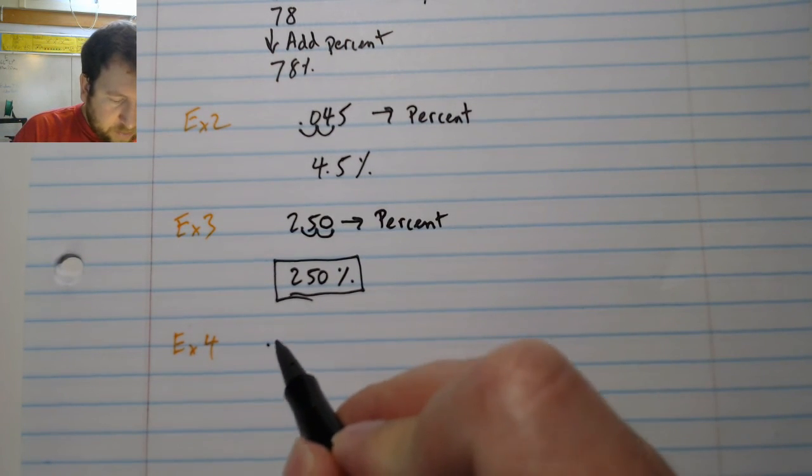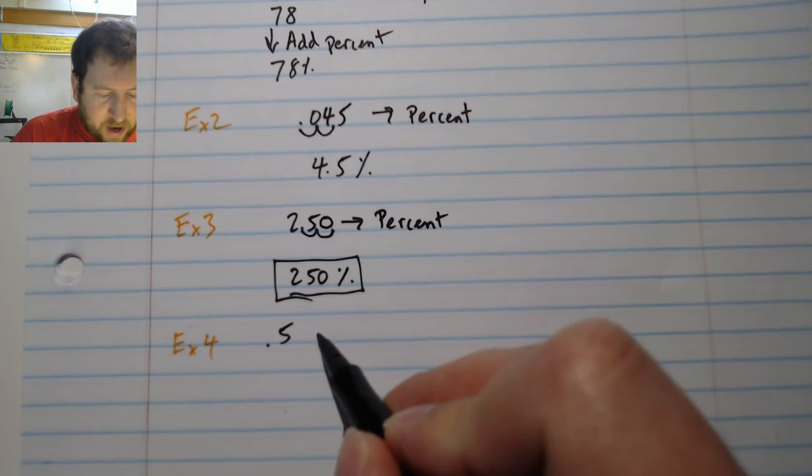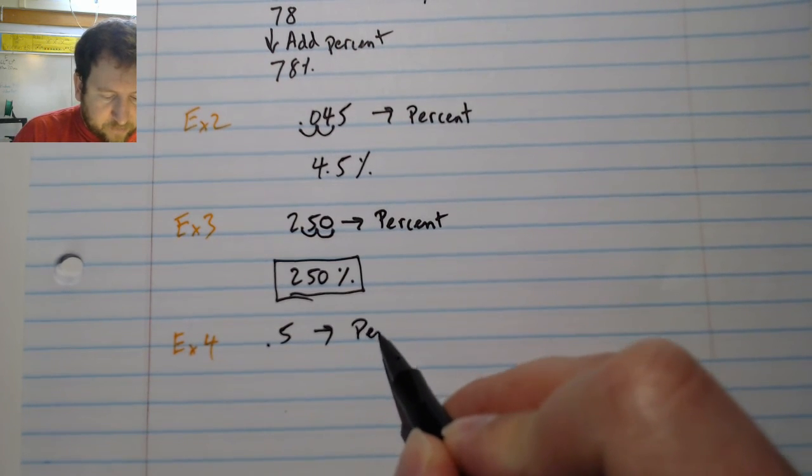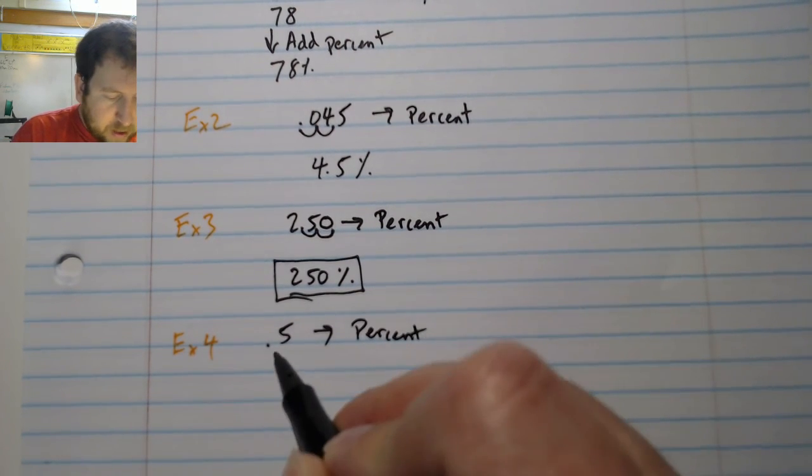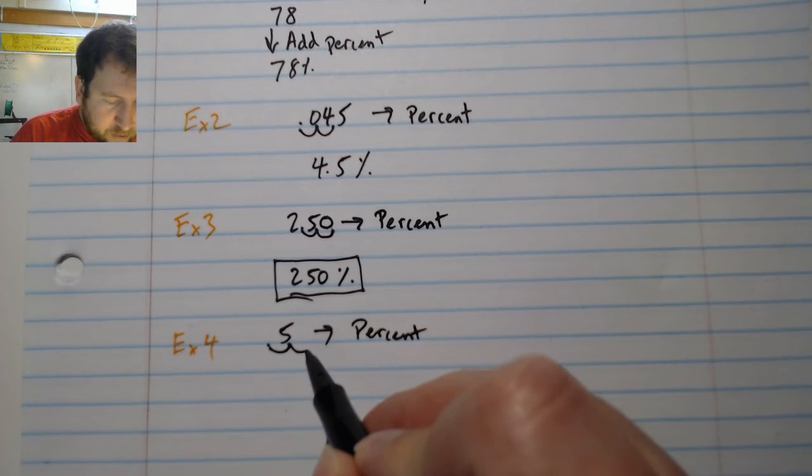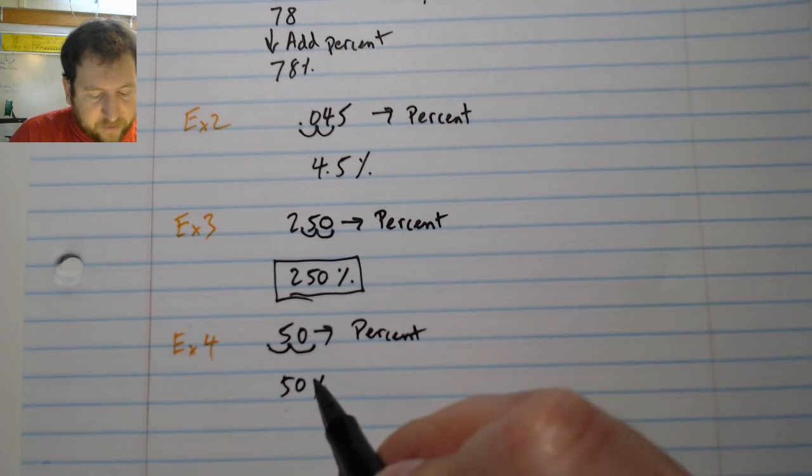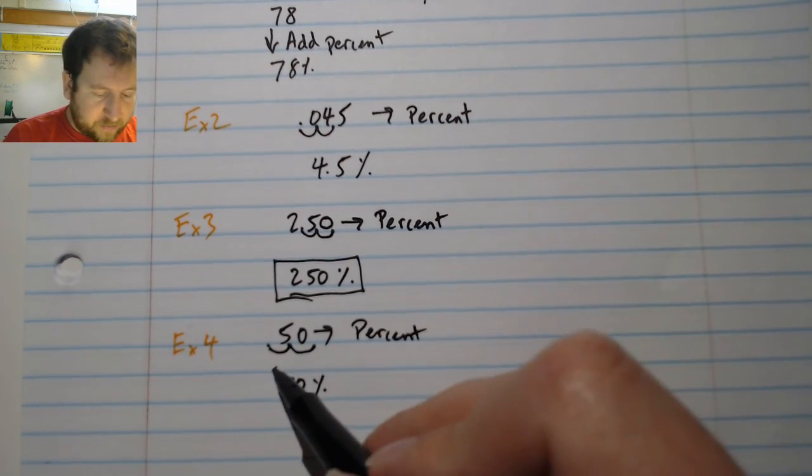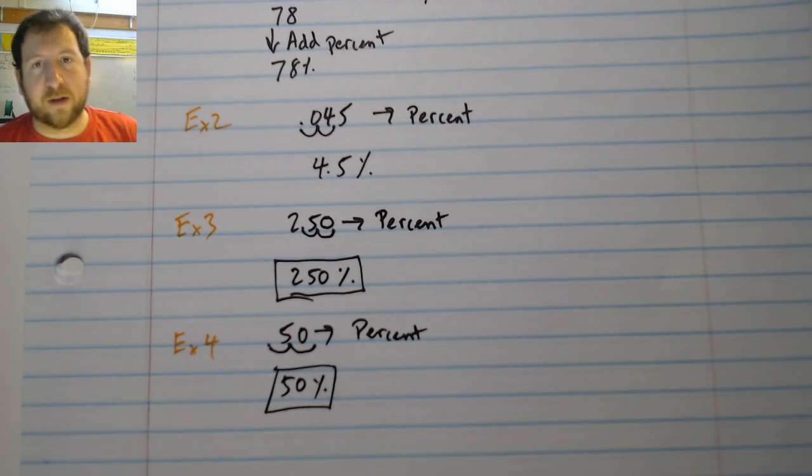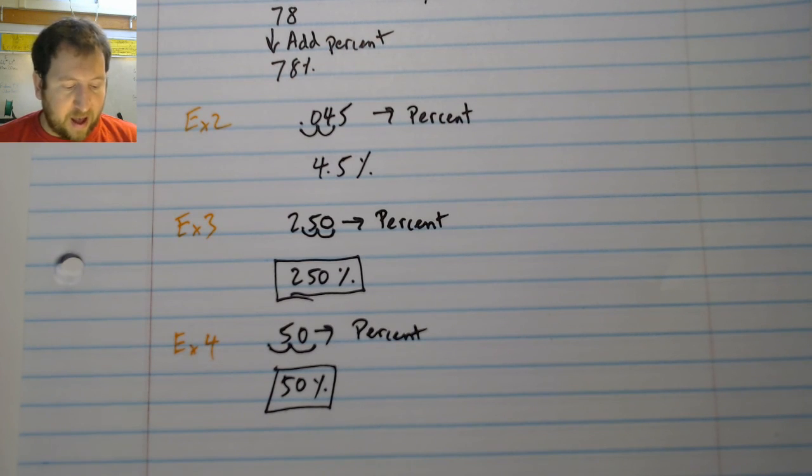And we're going to take 0.5 and we're going to write it as a percent. Okay, again, decimal one, two. I don't have any there, so I'm going to put a 50. I've got my 50. I'm going to add my percent. And I'm good to go. I don't anticipate this section being very difficult. So good luck and finish it quick. There you go.